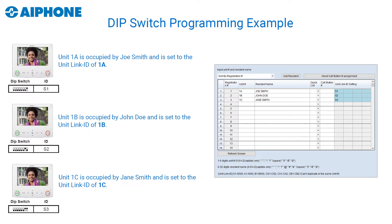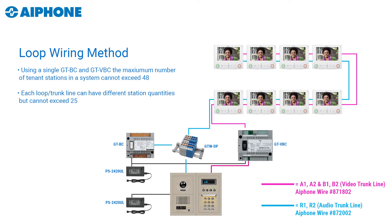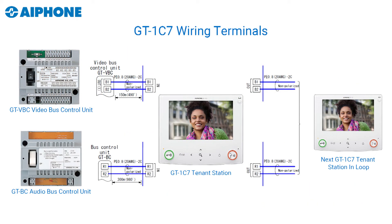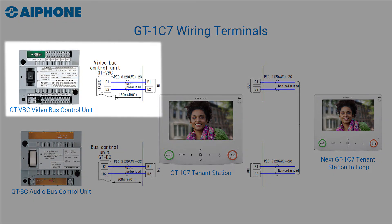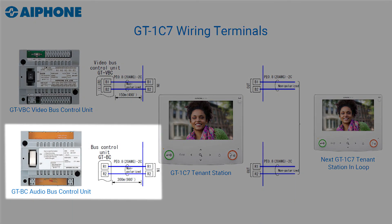Now we'll start adding our apartment stations using the loop method. On the right hand side you'll see a schematic of our loop wiring diagram. We'll go over this in detail by each terminal connection. Let's take a look at the connectors on the back of the tenant stations — concentrating on the most important ones: B1 and B2 for your video trunk, and R1 and R2 for your audio trunk.